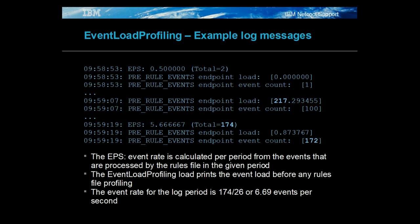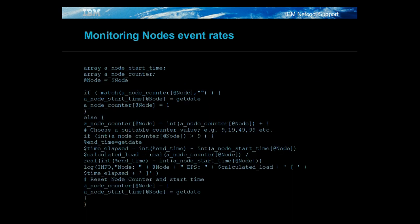The rules file logic used in the load rules can be used to calculate the event load per object, such as nodes. This is achieved by storing the event counts per object in an array and then calculating the events per second arriving from the object. In this example, the events per node are calculated using the stored event counter for the node and the time of when the count started. This type of EPS measuring is useful in an environment where nodes can create event storms that would be discarded at the rules file level.